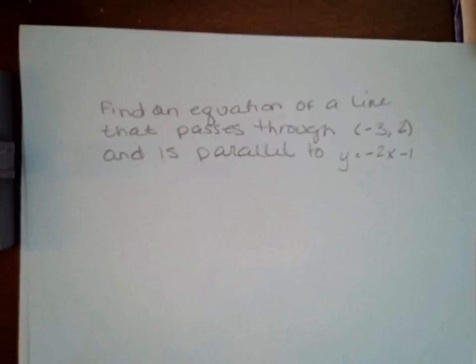We are asked to find an equation of a line that passes through the point (-3, 2) and is parallel to the line y = -2x - 1.